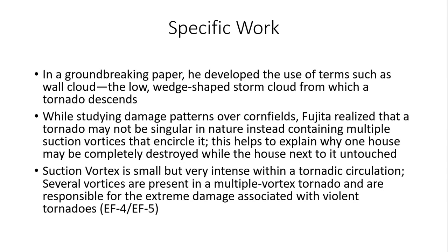In a groundbreaking paper, Fujita developed the term 'wall cloud' — the low wedge-shaped storm cloud from which a tornado funnel descends — which we commonly hear today in severe weather lingo. While studying damage patterns over cornfields, he realized a tornado may not be singular in nature. Instead, it could contain multiple suction vortices that rotate around the main vortex, which helps explain why one house may be completely destroyed while the house next to it is untouched.